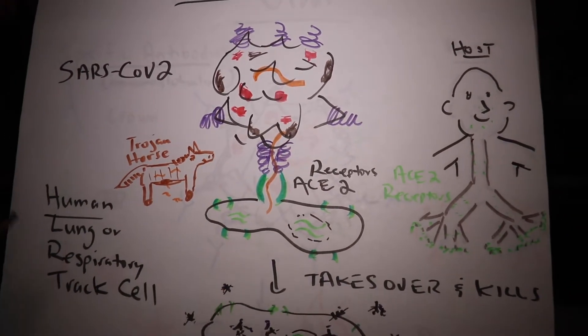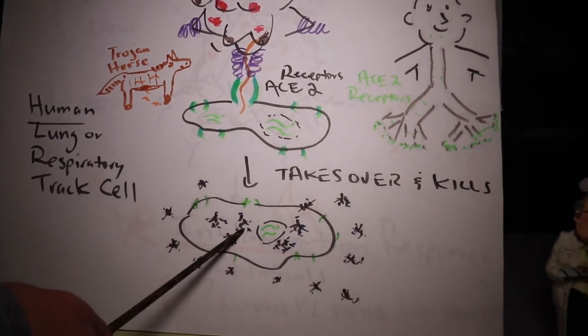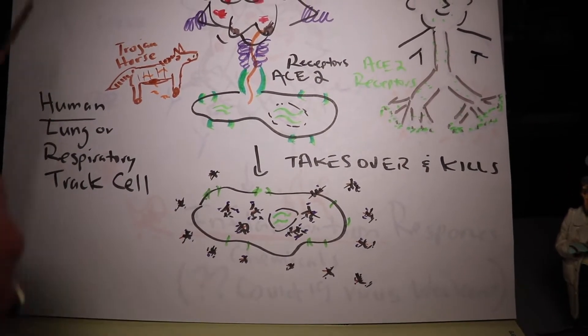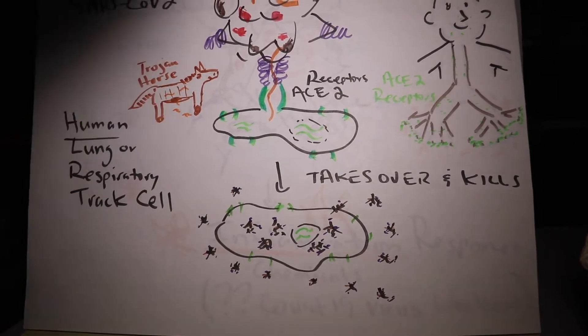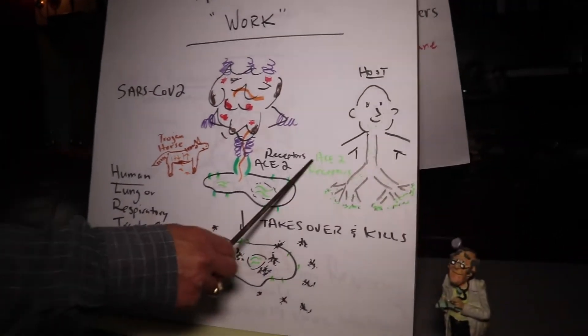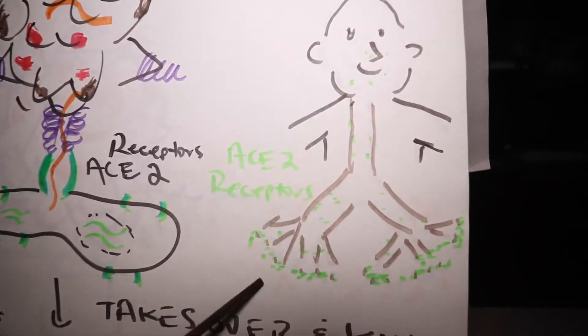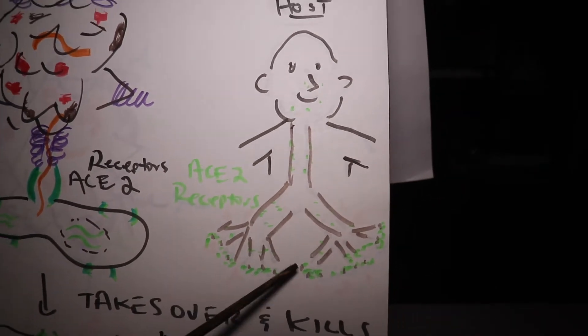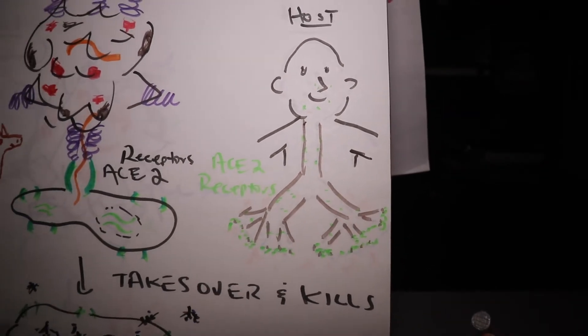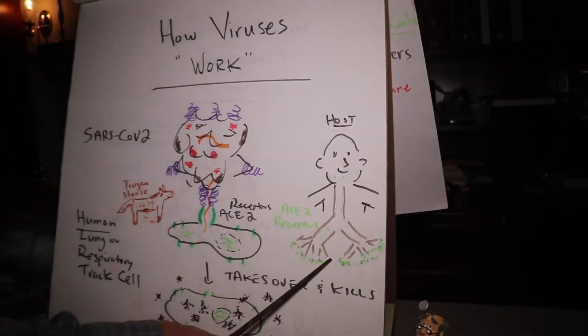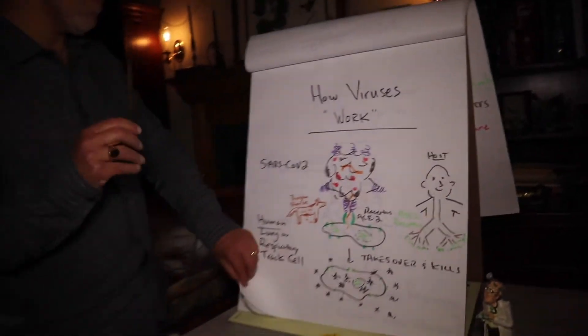Uses the cell's own machinery, creates more copies of itself, takes over the cell, spreads, grows, and eventually kills the cell. What's really interesting is that these ACE2 receptors are more common. They're more densely populated inside the lower parts of our breathing tract. Not as much so in our nose and mouth, and the deeper we go, there's more of them. Remember that.